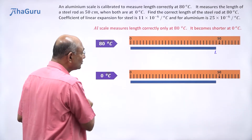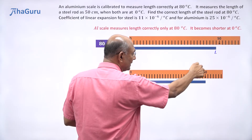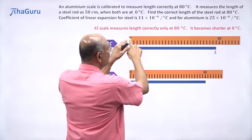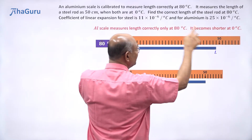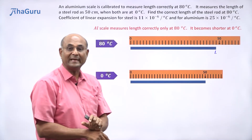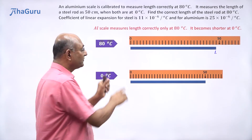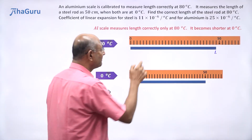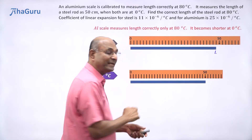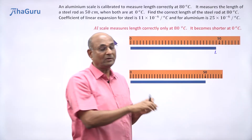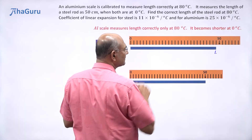Aluminum has a larger alpha compared to steel — that is 25×10⁻⁶ versus 11×10⁻⁶ — so the aluminum scale is going to shrink much more than the steel rod, but both will shrink because the temperature is dropping. When they shrink, the 50-mark is not 50 centimeters anymore — that is the 50-mark, but it was 50 centimeters at 80 degrees Celsius. At 0 degrees, the 50-mark is just a mark; it is not 50 centimeters because it has shrunk. But we have been told that at 0 degrees Celsius, the steel rod's length matches the 50-centimeter mark.